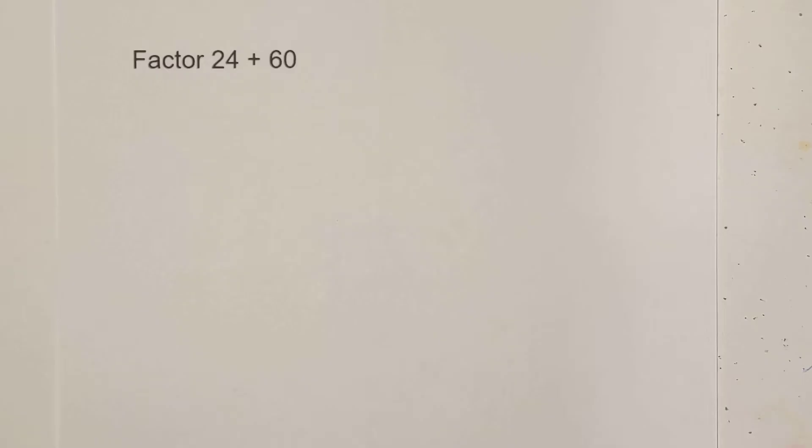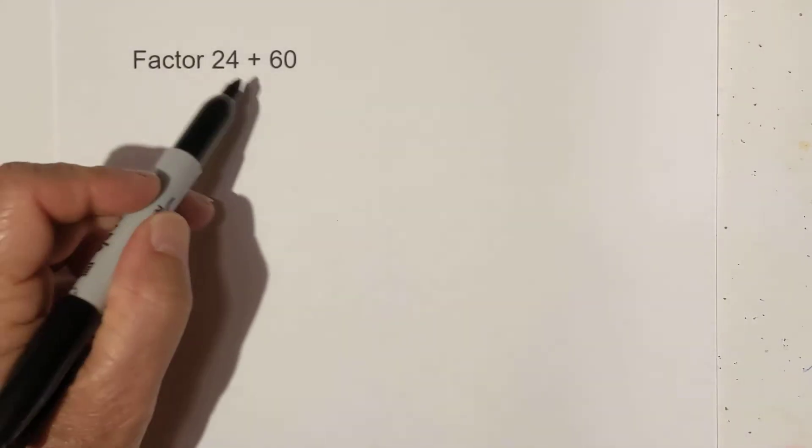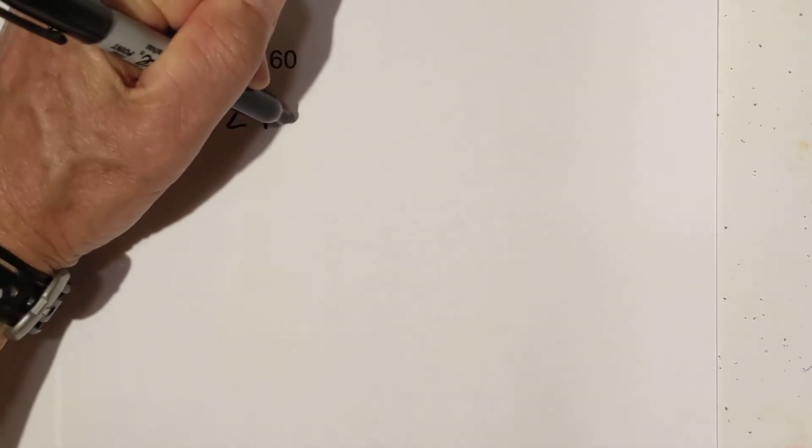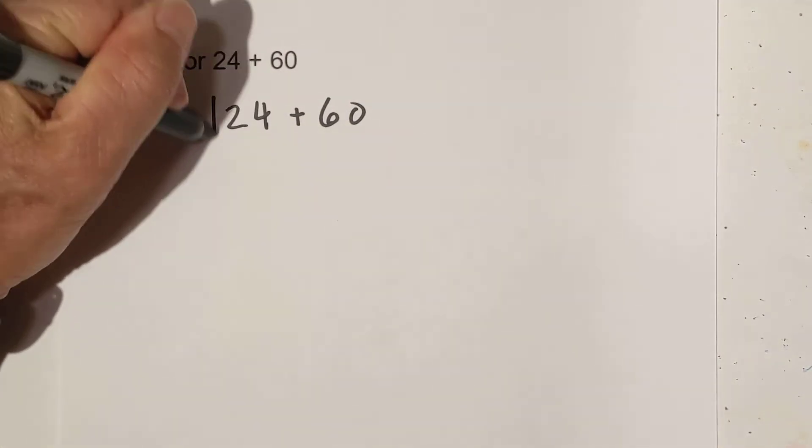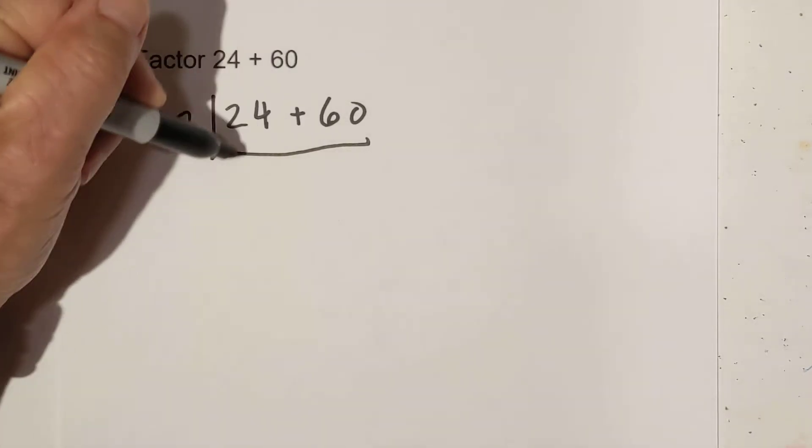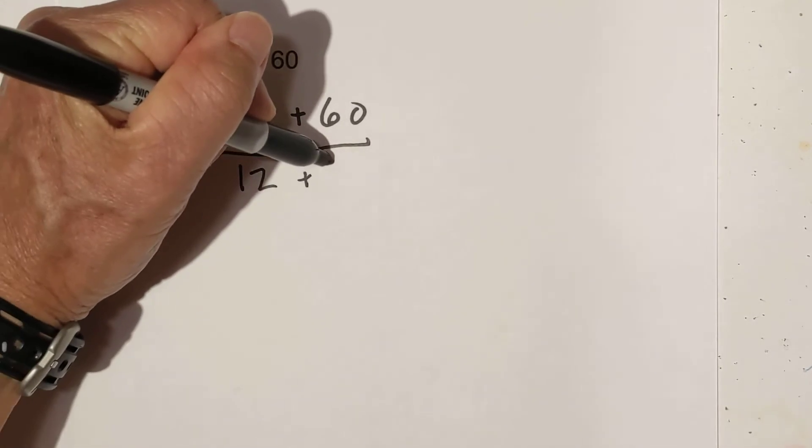Now let's work on another example. I'm going to do the same thing again. First thing I need to do is find the greatest common factor. Let's try the sled method first. I know that two goes into 24 and 60. So that's 12 plus 30.